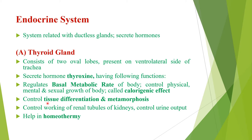Thyroxine also controls tissue differentiation and metamorphosis, and it controls the working of renal tubules of the kidneys, thus controlling urine output and helping in homeothermy.